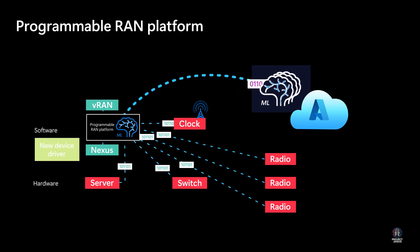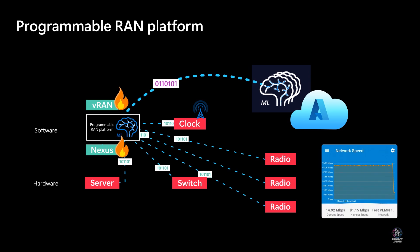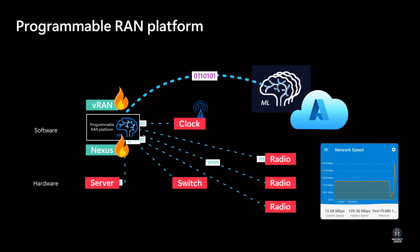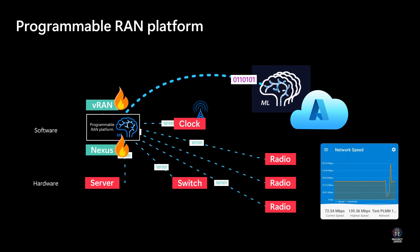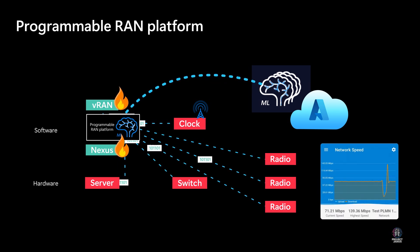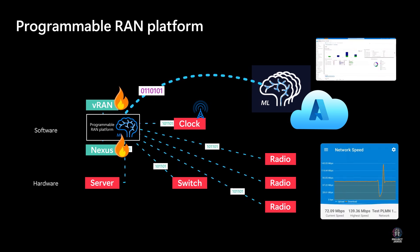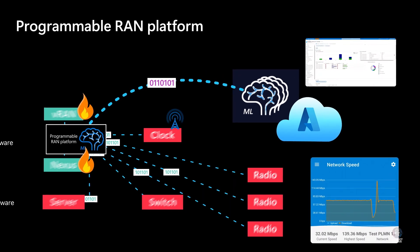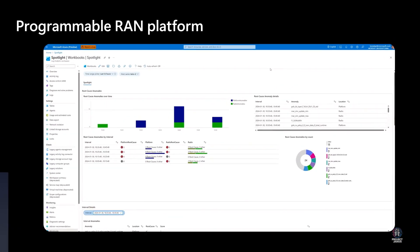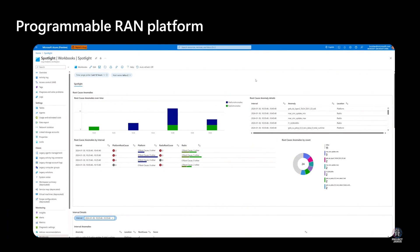For example, here are the effects of a real anomaly of CPU contention on the performance of a phone. RML, in conjunction with the Azure dashboards, help an operator quickly identify and pinpoint the root cause of the problem.